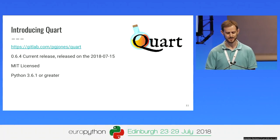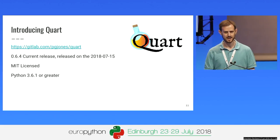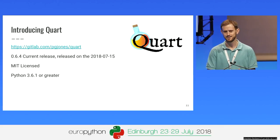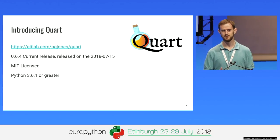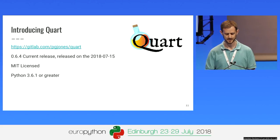To introduce Quart: you can find it on GitLab under my namespace. The current release is 0.6.4, which I released about a week ago. It has a nice logo someone at Coda made for me. It's MIT licensed, requires pretty much the latest version of Python, and I might upgrade the requirement because there are some nice features in 3.7 I want to use. It's been in development for a little over a year.